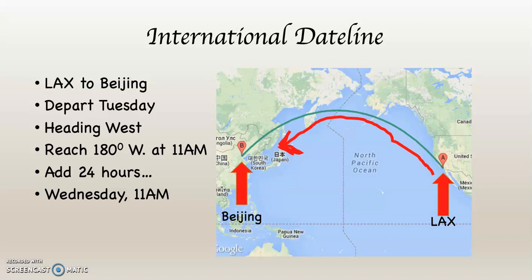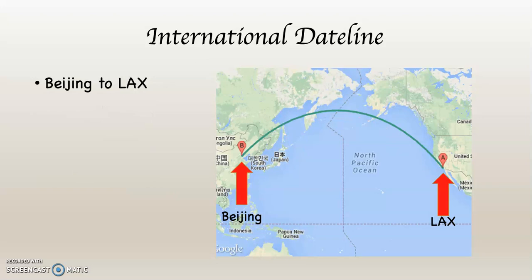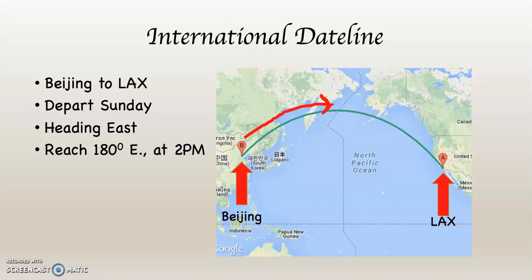So we land in Beijing, have a good time, and then we get on a flight and fly home — from Beijing to Los Angeles. Let's assume that we depart on a Sunday from Beijing going to Los Angeles. Now we're headed east, and let's assume that we reach the international date line at 2 p.m. So it's Sunday at 2 p.m. and we're going to cross the international date line.